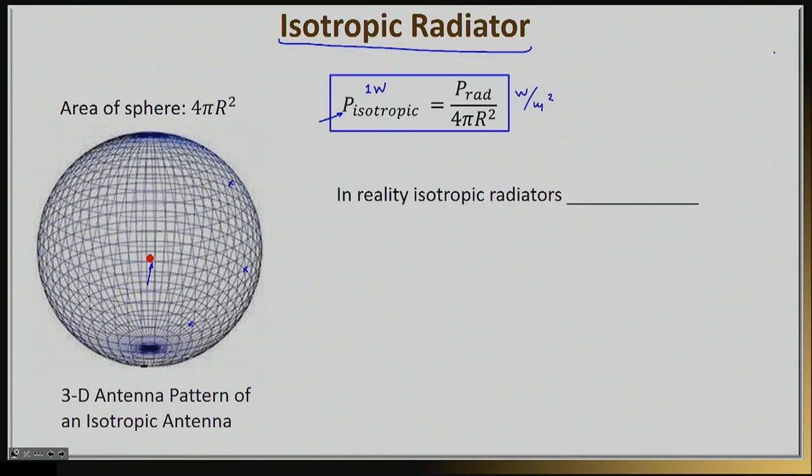Now isotropic radiators do not exist, so don't try to build one, it's actually impossible. Don't try to buy one, but it's a very important imaginary element because when we compare the radiation properties of normal antennas that you can actually buy, we will actually compare them to an isotropic radiator.